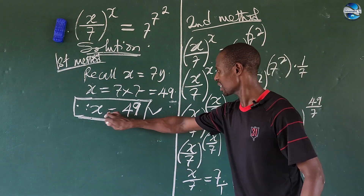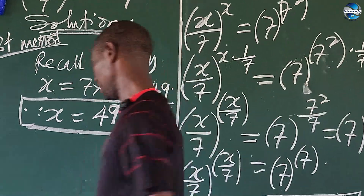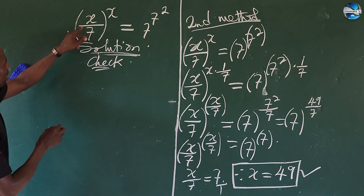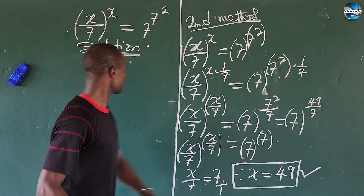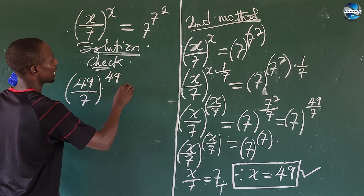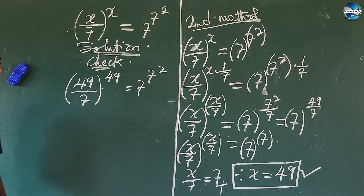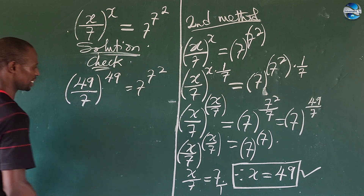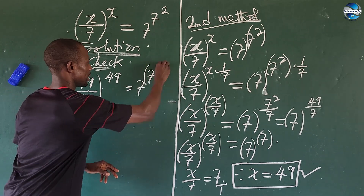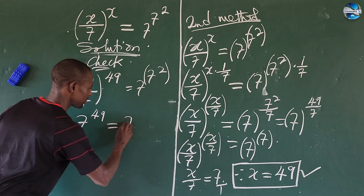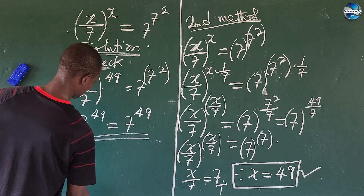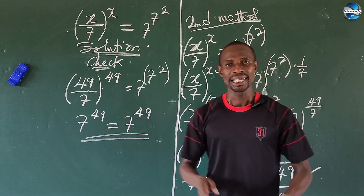So you discover that our first method gives x equal to 49, and the second method also gives x equal to 49. For the benefit of that, let's do a simple check. The question is x all over 7, all raised to the power of x. Where x is 49: we have 49 all over 7, close bracket, all raised to 49. This is equal to 7 to the power of 7, all to the power of 2. 7 can go into 49 to give us 7. So we have 7 raised to the power of 49, equal to 7 to the power of 2, giving us 49. So 7 to the power of 49 equal to 7 to the power of 49. That proves that the root x equal to 49 satisfies the original equation.